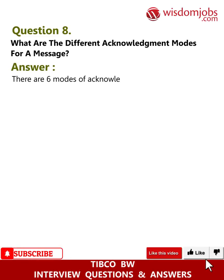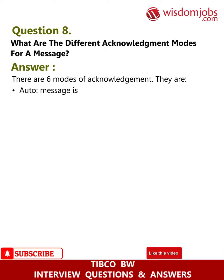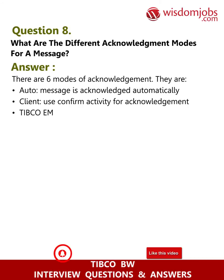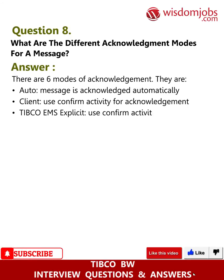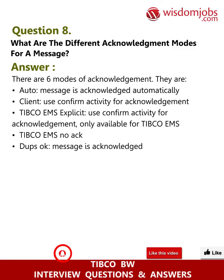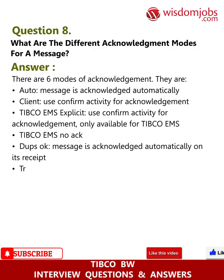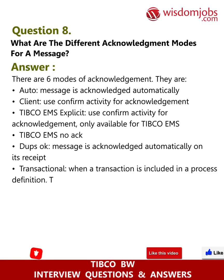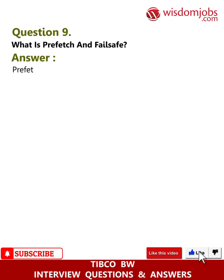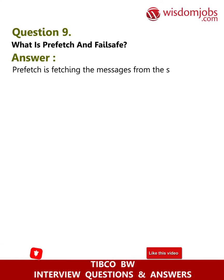Question 8: What are the different acknowledgement modes for a message? Answer: There are six modes of acknowledgement. Auto — messages acknowledged automatically. Client — use Confirm activity for acknowledgement. TIBCO EMS Explicit — use Confirm activity for acknowledgement, only available for TIBCO EMS. TIBCO EMS No Ack. Dupes OK — messages acknowledged automatically on receipt. Transactional — when a transaction is included in a process definition, the message is acknowledged when the transaction commits.